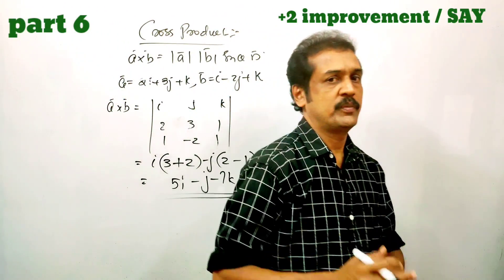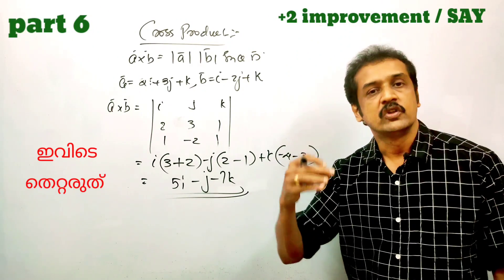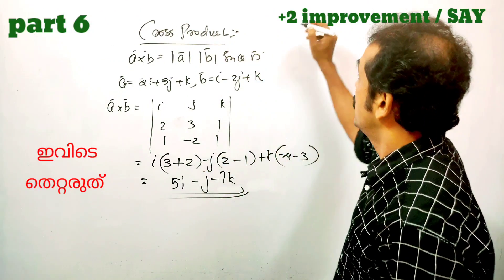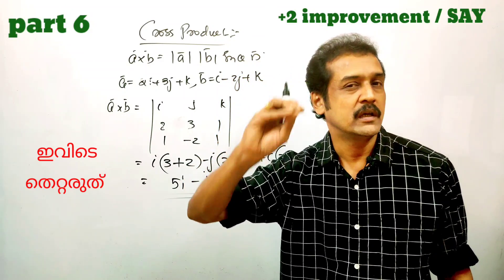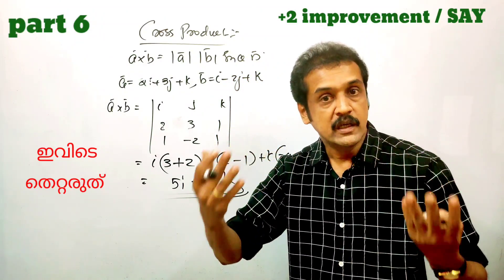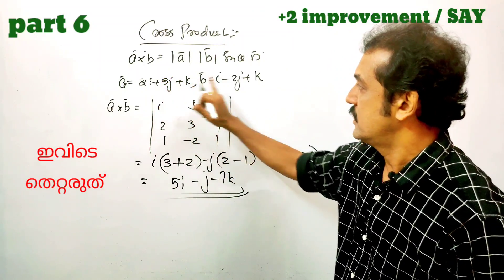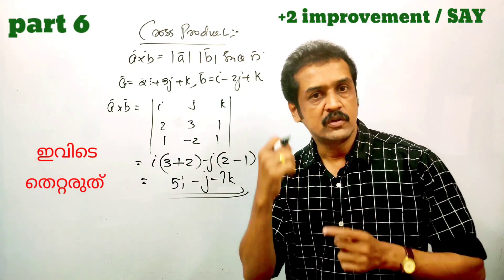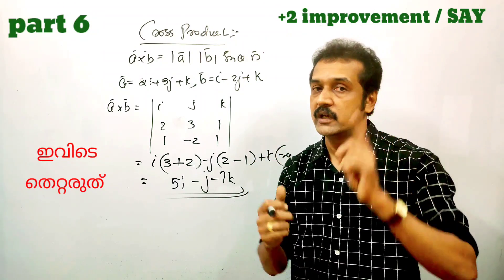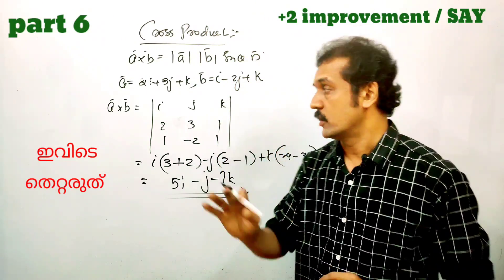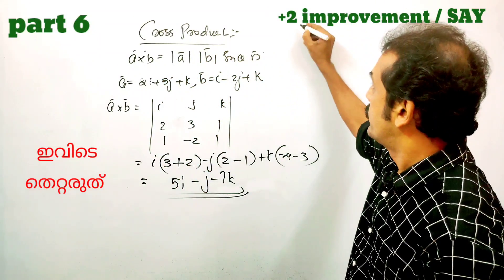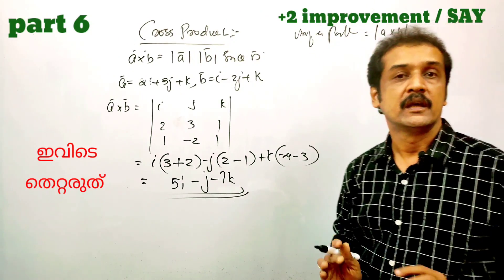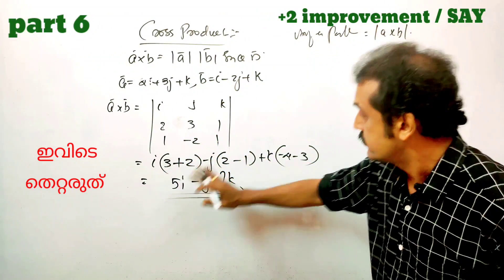Then A cross B — let's look at the result. We need to find the area of a triangle and the area of a parallelogram whose adjacent sides are these two vectors. One thing is A cross B. The area of a parallelogram formula is modulus of A cross B.